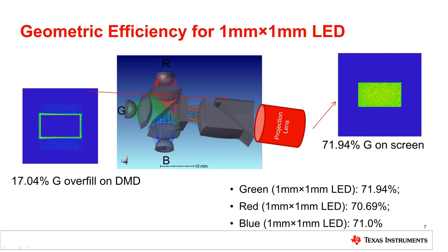We will also need to allow for reasonable overfill on the DMD to accommodate alignment error due to various tolerances. After the overfill loss, the design achieved high geometric efficiency at around 71% across all LEDs. Note that the efficiency is measured at the screen, where we assumed an ideal F1.7 telecentric projection lens.